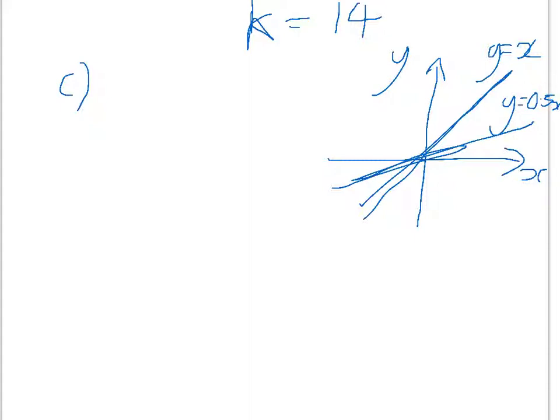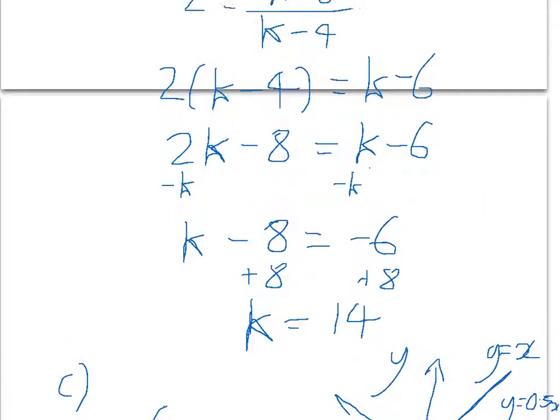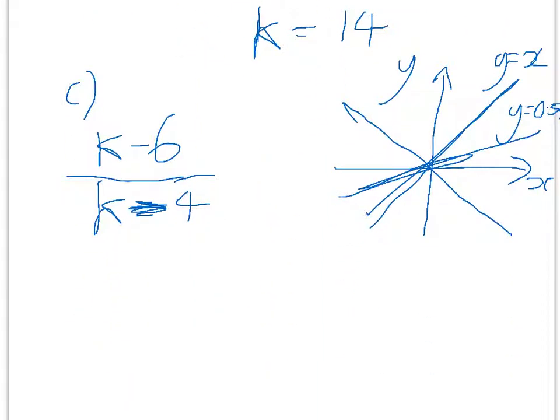And remember, of course, if the line goes down here, it becomes a negative gradient. So, what we're actually saying is we want k minus 6 over k minus 4 equal to 0. That's what we're asked. So, we're told to set that equal to 0.